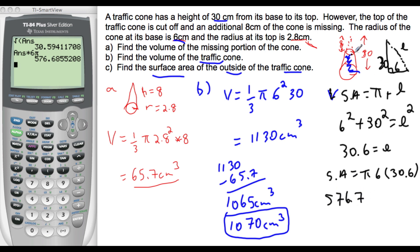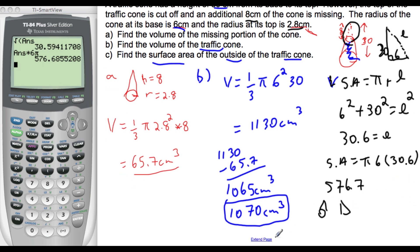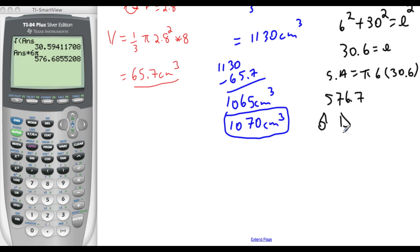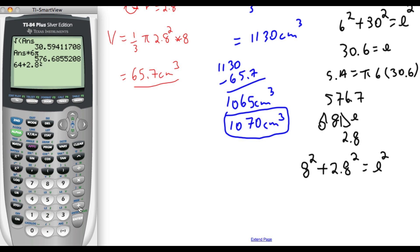Now we need to subtract this top part, which is a cone, with a radius of 2.8 and a height of 8. So a radius of 2.8 and a height of 8. We again need to find this L. So 8 squared plus 2.8 squared is L squared for the very top. 8 squared is 64 plus 2.8 squared. And the square root of this gives us 8.48.